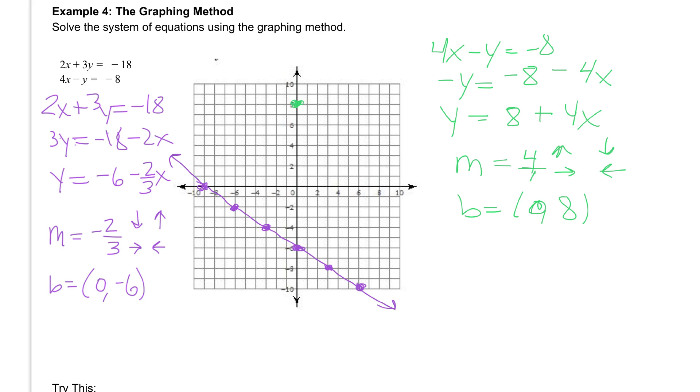And then we want to go up 4. But if you look, we can't go up because we've run out of room. So instead we're going to go down 4 and to the left 1. So plot as many of those points as you can going down 4 and to the left 1, and then draw your line in as straight as you can.